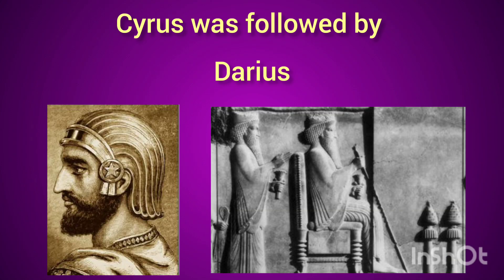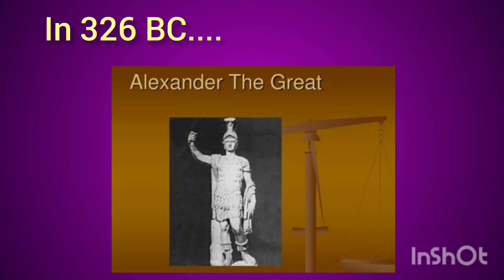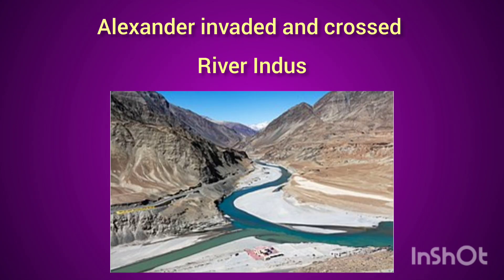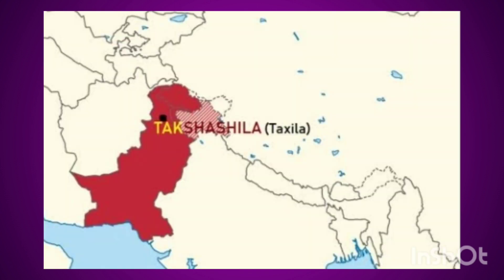In 326 BC, Alexander the Great invaded Persia and crossed the river Indus. He was welcomed by the ruler of Taxila.